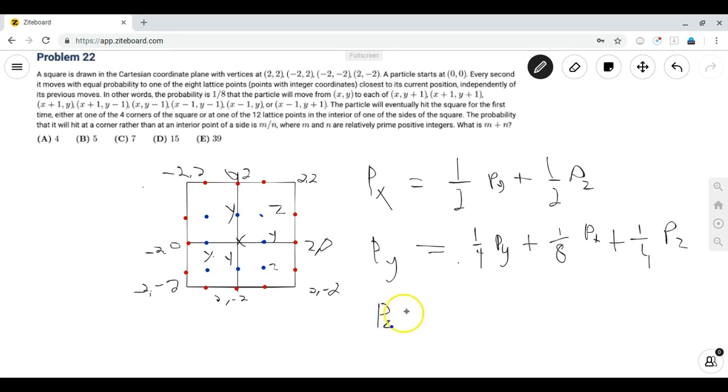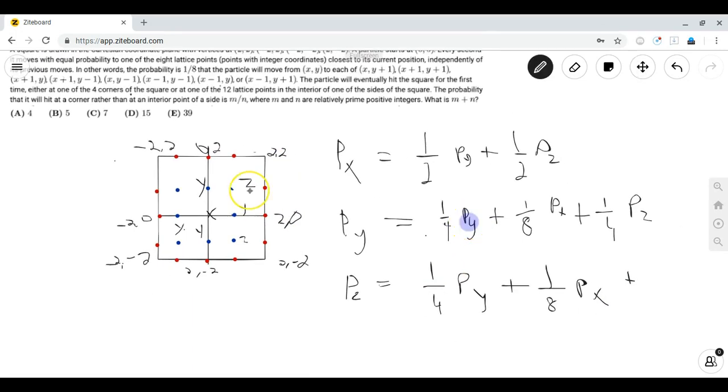Now if you go to point Z, we see that P(Z) is equal to... you can move to Y with one-fourth probability. You can move back to X with probability one-eighth. And you can move right or up, but you're gonna hit a red point and then your walk will end. However, you can move diagonally up with probability one-eighth, in which case you hit a corner. So if you hit a corner, then we're done. So that would be with probability one-eighth.